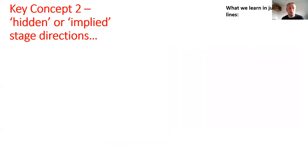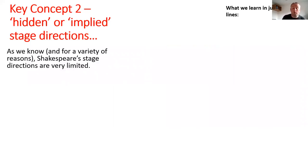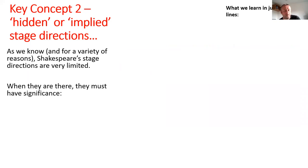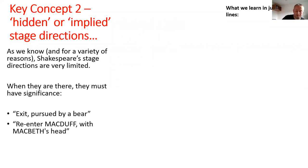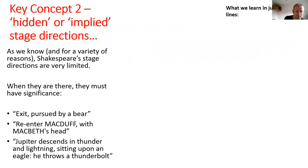Shared light leads into concept two: the idea of hidden or implied stage directions. I always make the point that Shakespeare's stage directions are very limited, and I put it to students as a hypothesis: when stage directions are present, they must have significance. I've picked three examples — 'Exit, pursued by a bear' from The Winter's Tale; 'Re-enter Macduff with Macbeth's head'; and my favourite from Cymbeline: 'Jupiter descends in thunder and lightning, sitting upon an eagle; he throws a thunderbolt.' That'd be pretty hard to stage even in a modern theatre.